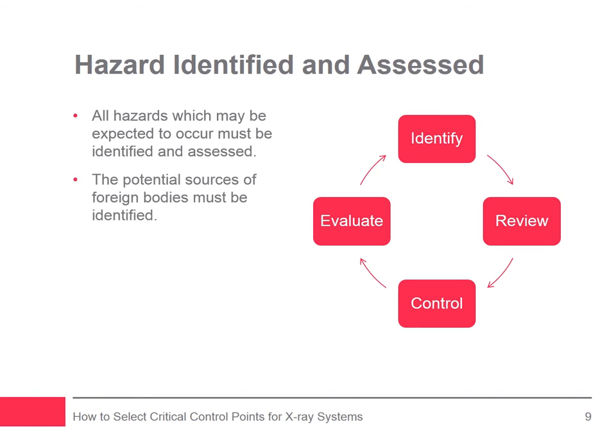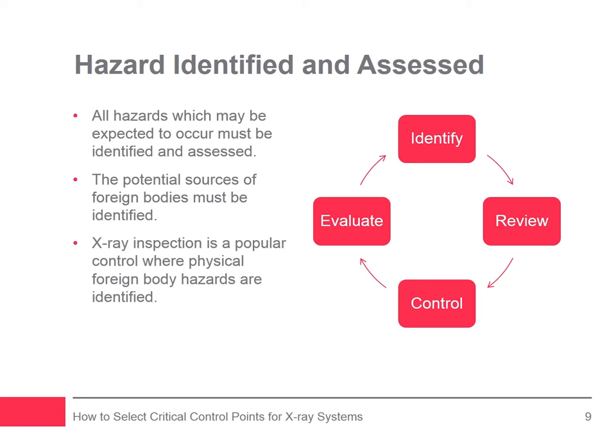The potential sources of foreign bodies also need to be identified. For example, if a producer makes snack or cereal bars, the hazard analysis may show a potential risk of foreign bodies from the following areas: stone and glass from incoming raw materials, sieve wire from damaged sieves, blades or paddles from mixing or blending of ingredients, metal fragments from the rolling process, and cutting blades from the final cutting of the bars. These examples show that different types of foreign bodies can cause potential contamination at different stages of the production process.